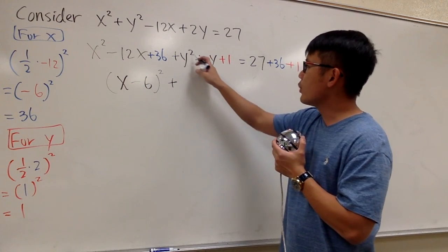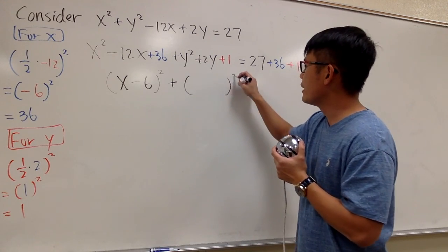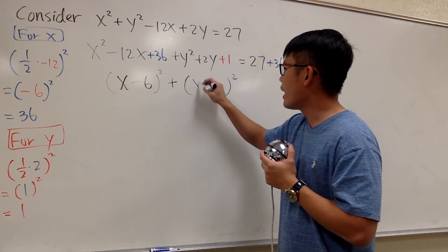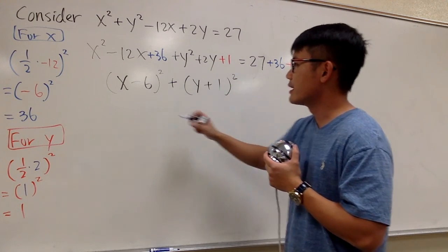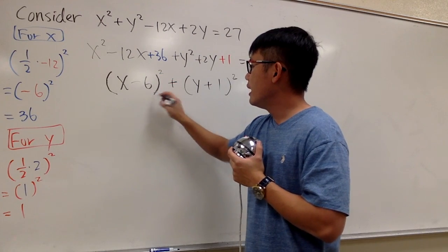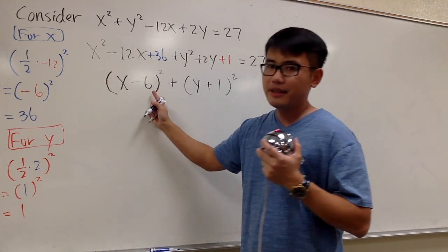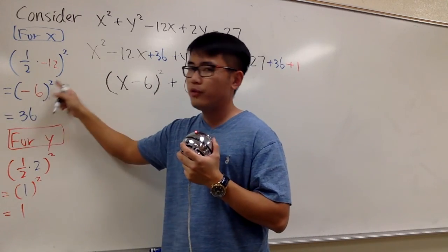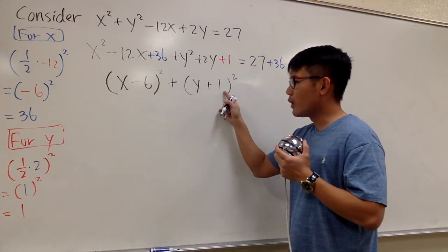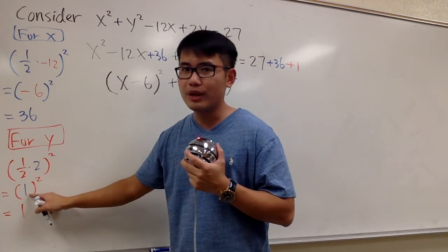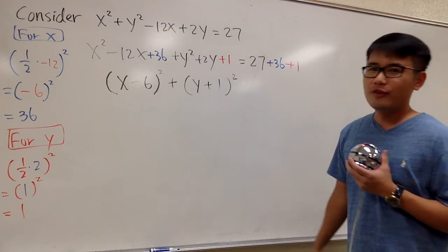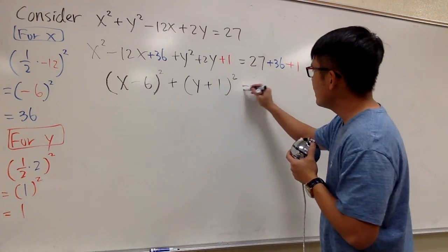And then don't forget to bring down the plus. And then for y squared plus 2y plus 1, we can also write it as something to the second power. In this case, it will be y plus 1 to the second power. A little hint right here is that this minus 6 is going to be the number before we square it. And this positive 1 is this positive 1 in blue, the number before we square it.